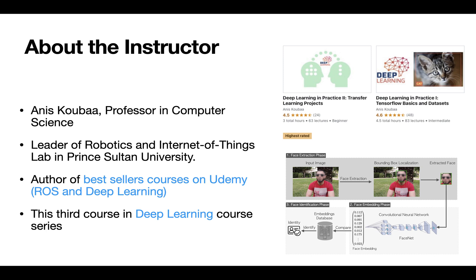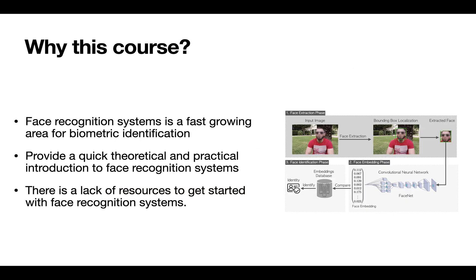I am Anis Kouba, working as a full professor in computer science and the leader of the Robotics and Internet of Things Lab at Prince Sultan University. I am the author of two best-seller courses on deep learning and robot operating system. This course is the third in the series Deep Learning in Practice, dealing with face recognition systems. The series intends to present advanced deep learning topics in a very easy manner to beginner users who would like to get started with hands-on projects in minimum time. The two previous courses covered object classification and transfer learning. This course is important due to the significance of face recognition in real-world applications such as surveillance systems, face access systems, and biometric identification.